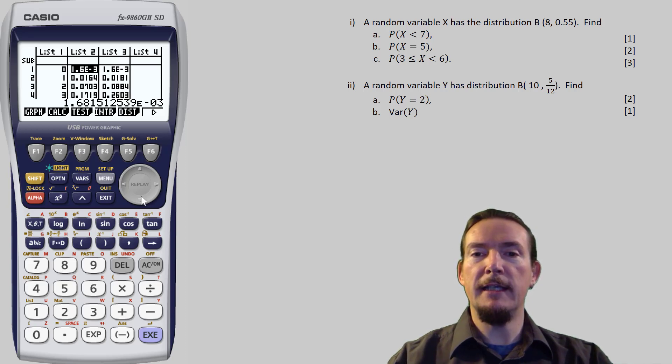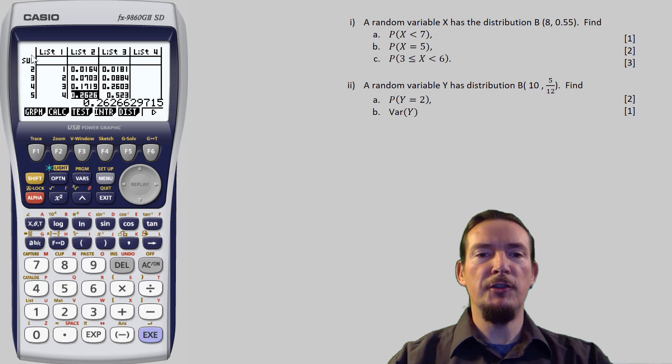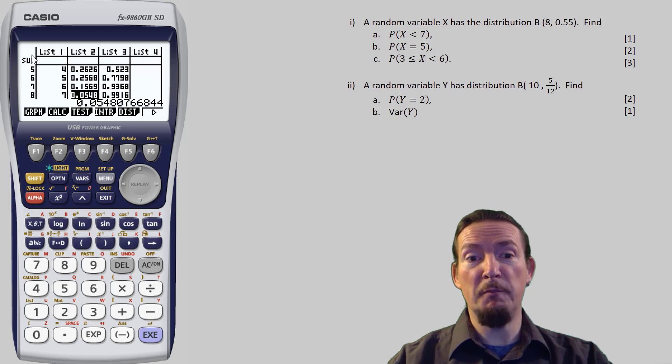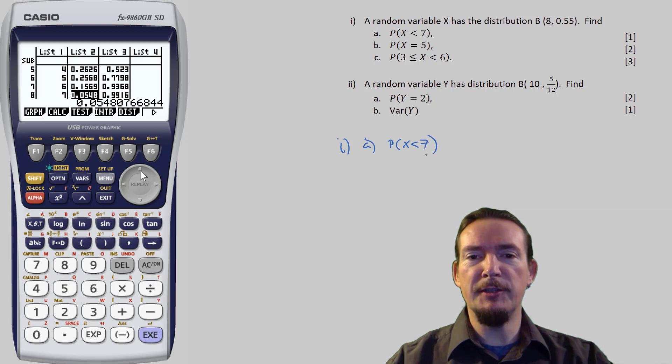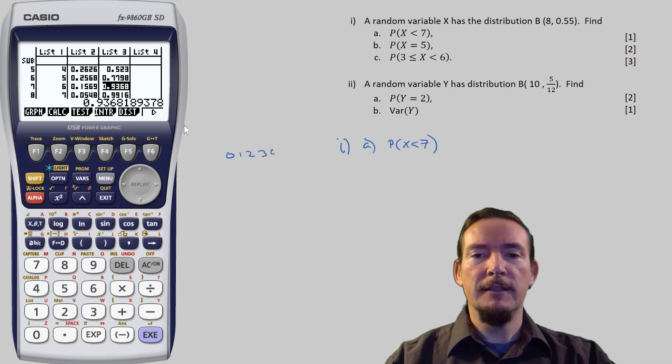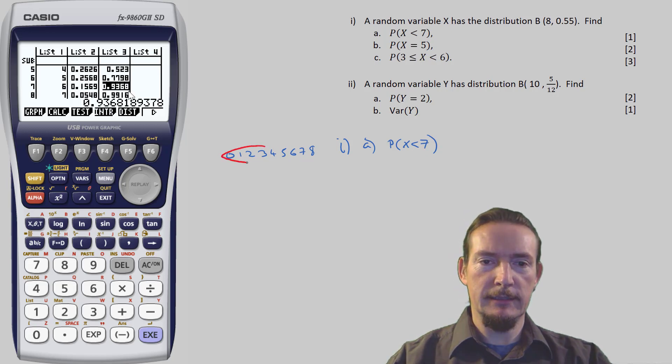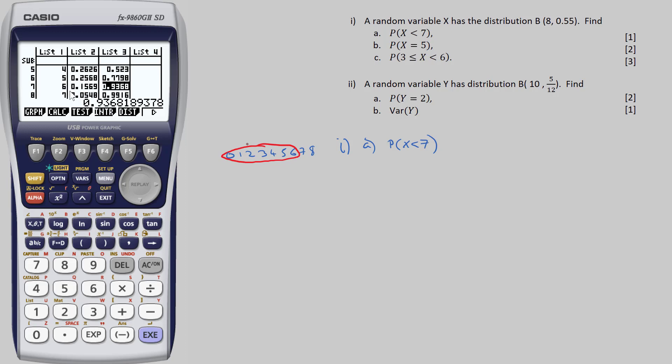Question A asks for the probability that x is less than 7. Now when students make mistakes with these questions, it's nearly always with picking the appropriate range. So if you struggle with this, I think it's helpful to visualise this range by listing the possible values and putting a ring round the ones we actually need. So x being less than 7 means all the numbers from 0 through 6. So the probability of x less than 7 is equal to the probability of x less than or equal to 6, and that is given by our cumulative probability next to the 6 here, which is 0.9368 or 0.937 to 3 significant figures.